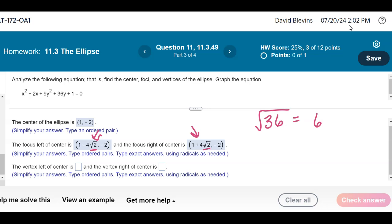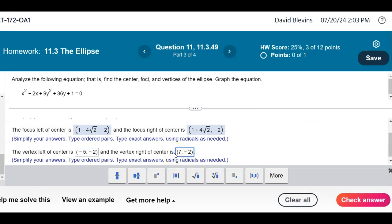So 1 minus 6 is negative 5. 1 plus 6 is 7. Notice for all of these points, the y coordinate's staying negative 2. We move away from the center for the focus and the vertices, the foci and the vertices, in the same direction. So we're not moving up and down, we're just moving left and right for all of these.